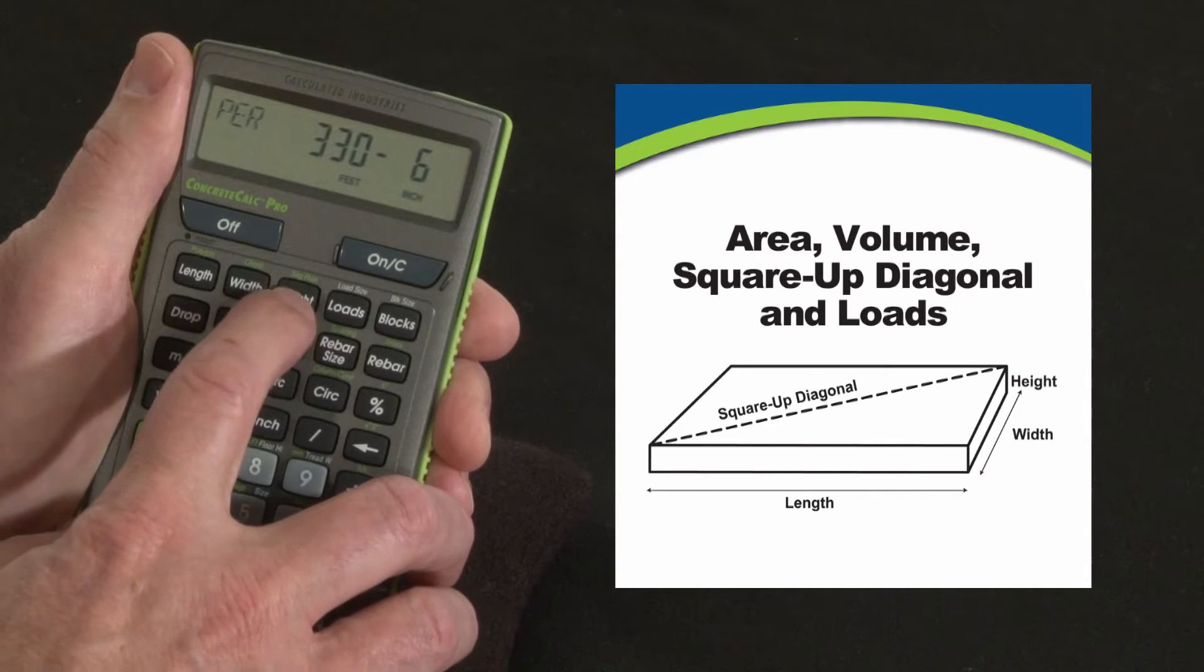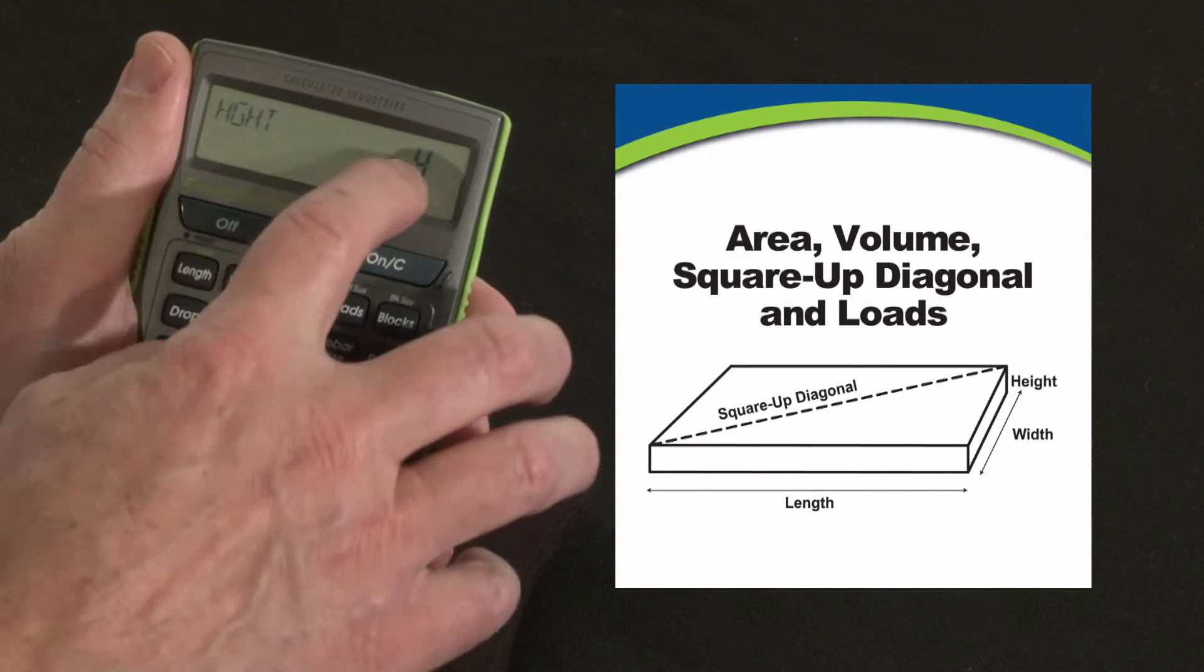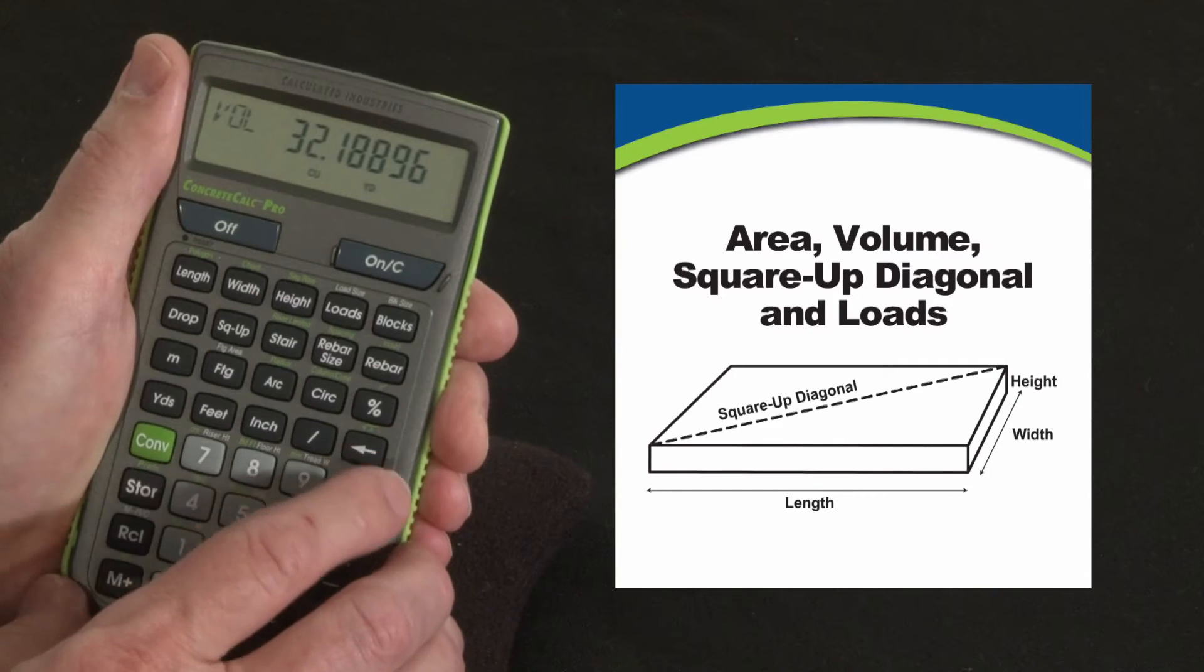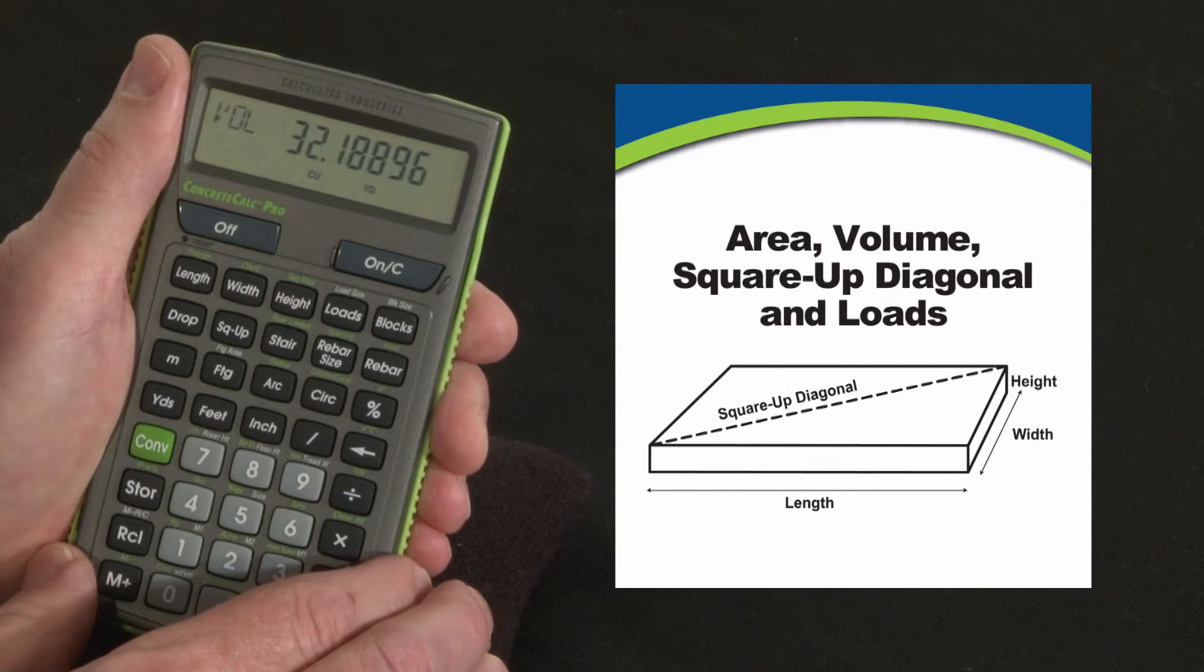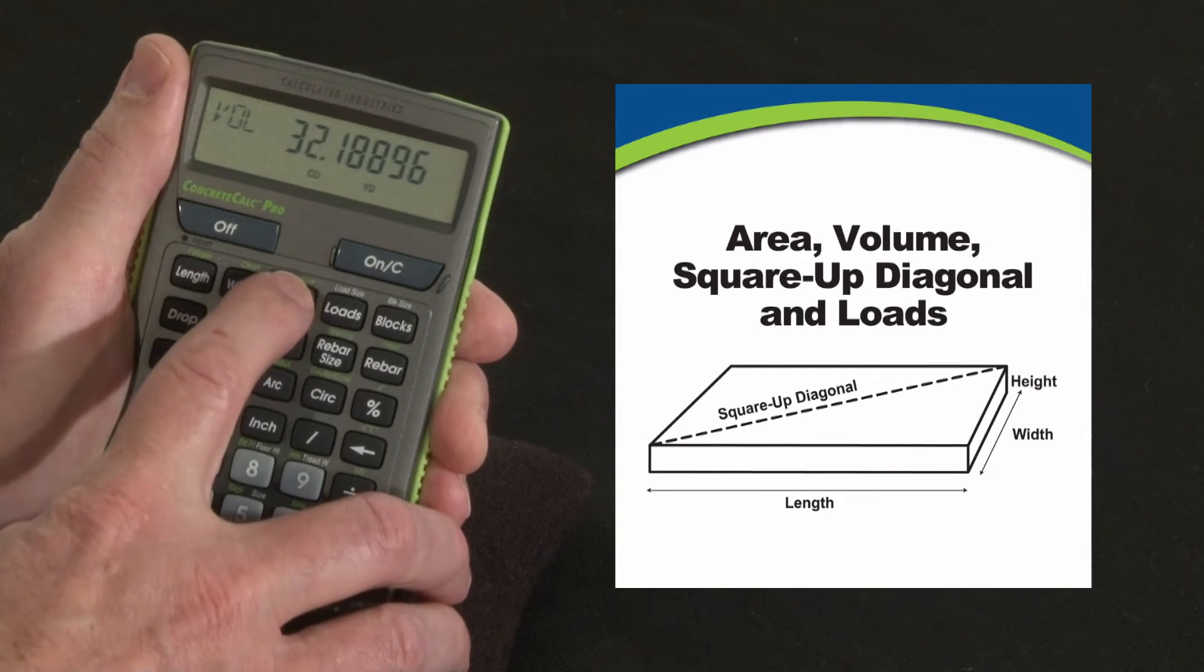We can come over here to the height key, press it, confirms the 4 inch depth, press it again, there's how many cubic yards we need for this: 32.18 cubic yards. I can press it one more time.